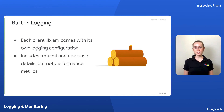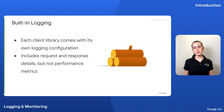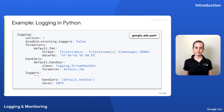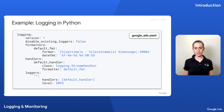These built-in logs include request and response details, including information about whether the request succeeded or failed, as well as a request ID, which can be helpful for debugging. However, they do not include application health signals, such as resource utilization. In Python, for example, logs are configured in a Google Ads YAML file. Each client library offers some language-specific variation.